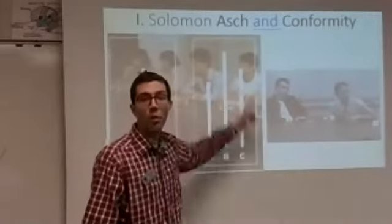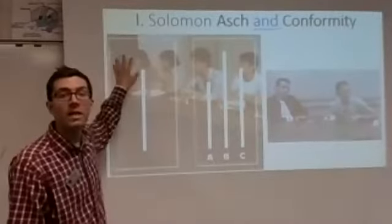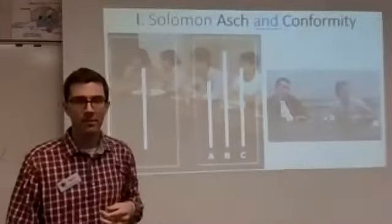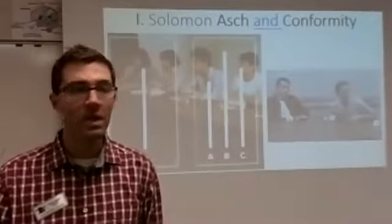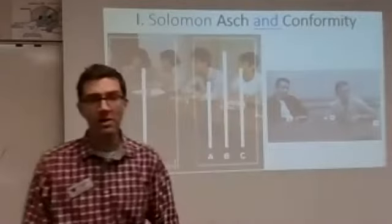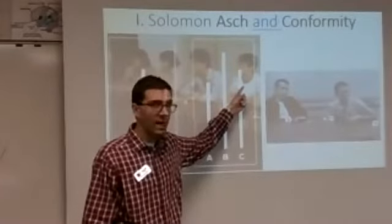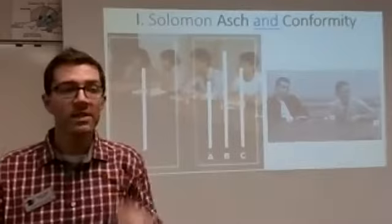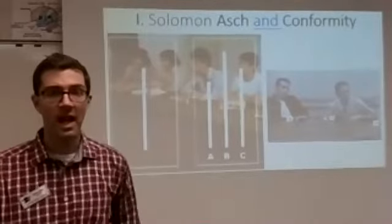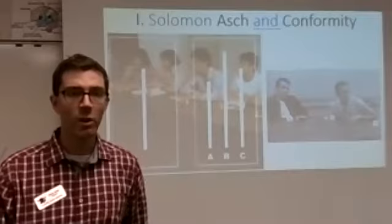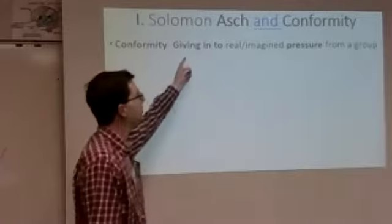The fifth guy didn't know it, but those first four people were confederates — actors who were in on the experiment, purposefully giving the wrong answer. What they found is that a lot of the time, the real subject would give an answer that went against what they actually saw, simply because the rest of the group had all said A. So make sure you watch this video clip.